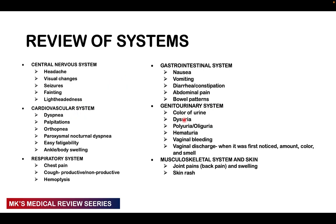Then comes the review of systems, as in any other department. For the central nervous system, look at headache, visual changes, seizures, fainting, lightheadedness, and dizziness.